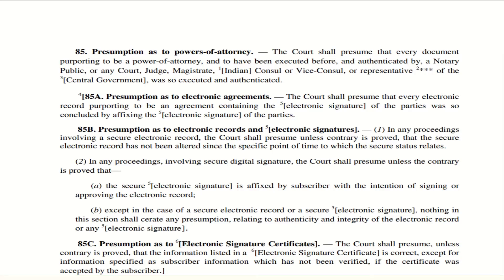Section 85A — Presumption as to electronic agreements. If there is an electronic agreement, it is deemed that the electronic signature of the parties was concluded by affixing their electronic signature. Simply put, if an electronic signature is put, it is deemed that the party has put that electronic signature — the court will presume so with respect to electronic agreements.